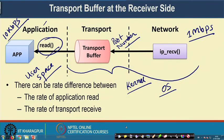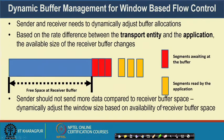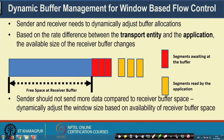Let us look at dynamic buffer management in detail. For window-based sliding window flow control, the sender and receiver need to dynamically adjust their buffer allocation. Based on the rate difference between the transport entity and the application, the available receiver buffer size may change.